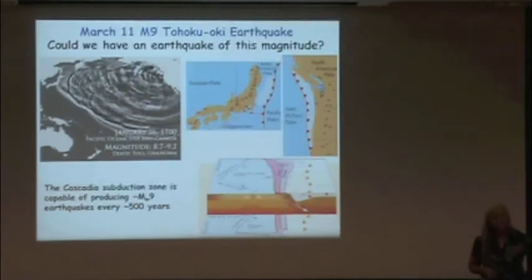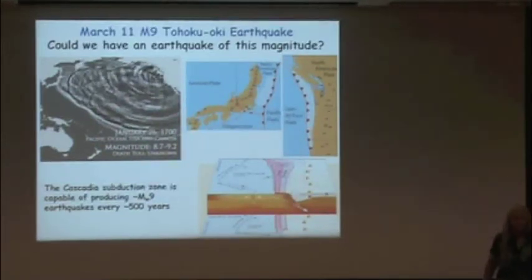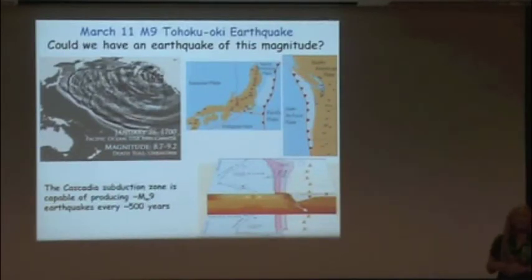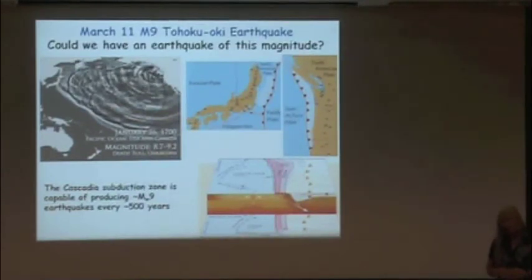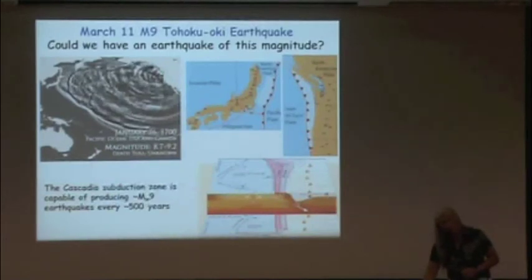In response to a question about the transform fault heading out to a spreading center: most of those quakes are on the spreading center, or on little faults related to the plate being produced there, or related to the plate buckling and going underneath. Most of the earthquakes that happen there are not thrust earthquakes but strike-slip earthquakes — even the one from last January was a strike-slip earthquake.